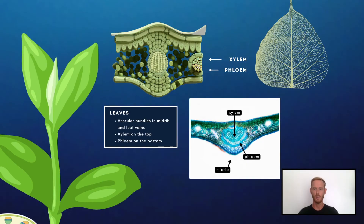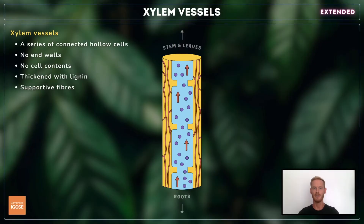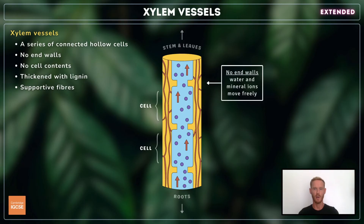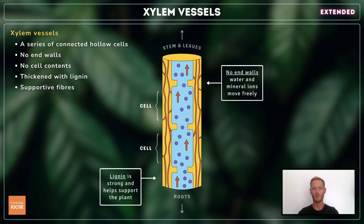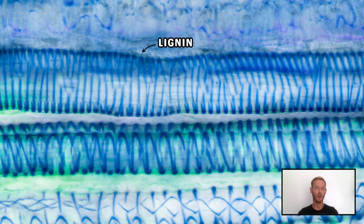That's everything you need to know for core, but for extended you also need to relate the structure of xylem vessels to their function. A xylem vessel is comprised of a series of long, hollow cells that have no cytoplasm or organelles. They also have no end walls, and thus form a continuous tube through which water and mineral ions are transported. Their walls are thickened with a substance called lignin, which makes the vessel strong and impermeable. Xylem also contains many long, lignified cells called fibres, which provide additional support for the plant.